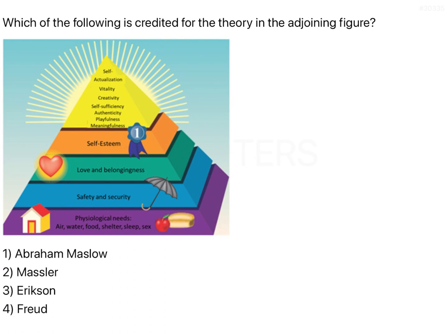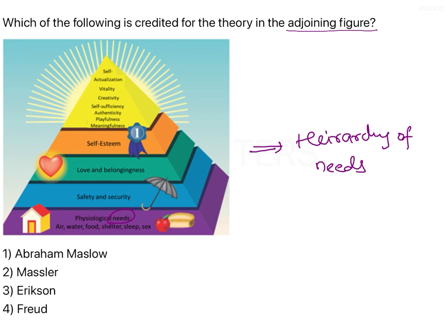Which of the following is credited for the theory in the adjoining figure? What we see in this figure is a pyramid with various stages or levels, and each level consists of a certain need. This is basically the hierarchy of needs that was put forward by Abraham Maslow in the year 1943.